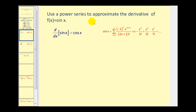For example, we can use power series to approximate the derivative of f(x) = sin(x). Of course we know the derivative of sine x is equal to cosine x, but let's go ahead and approximate this derivative using power series. There are a couple ways of doing this: we can either differentiate the summation, or we can differentiate the right side by differentiating the individual terms.